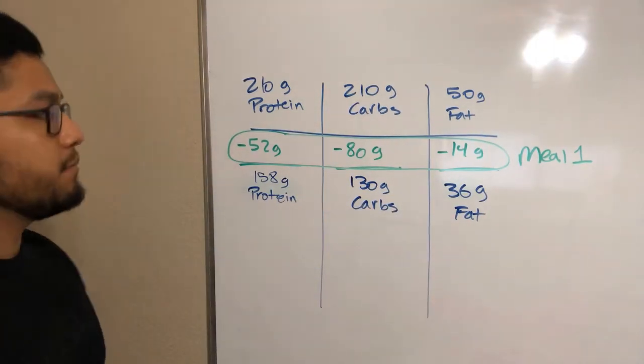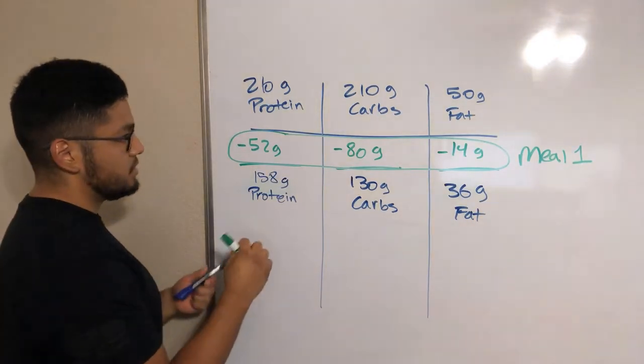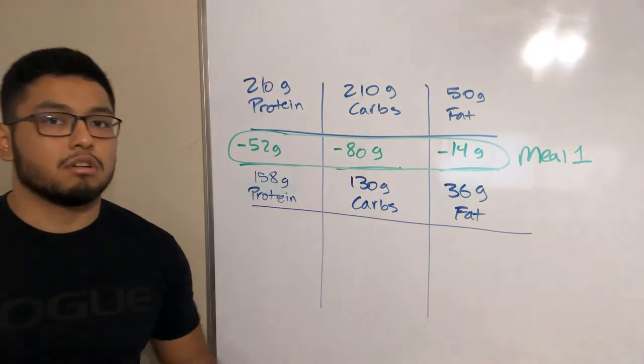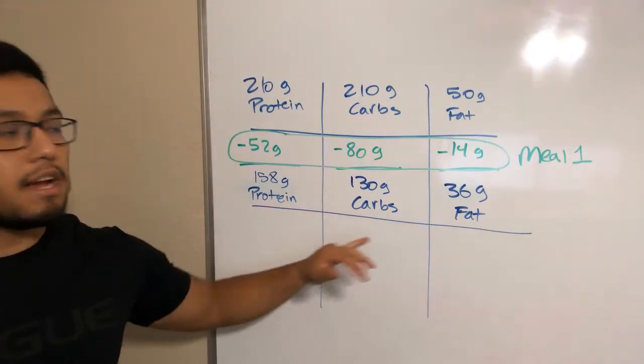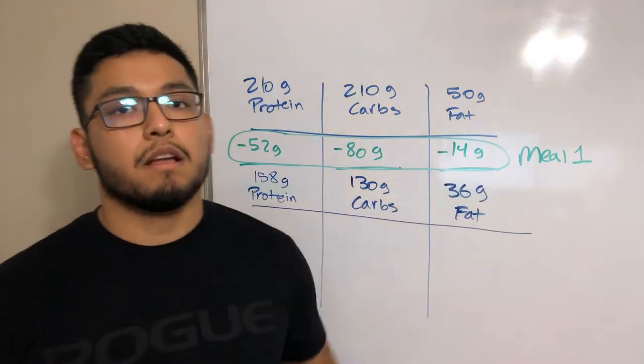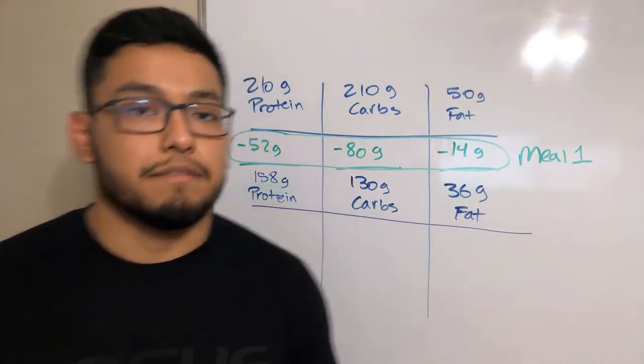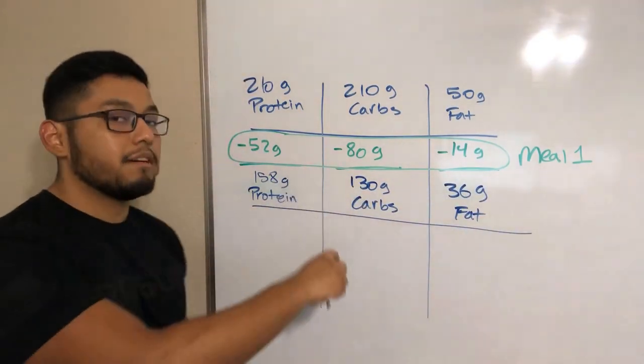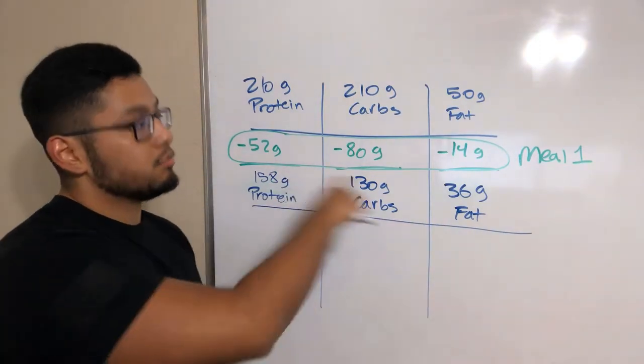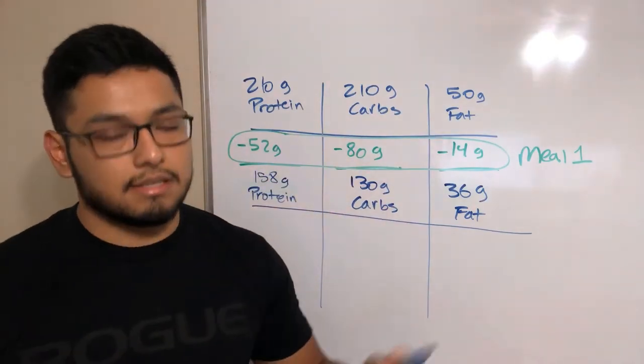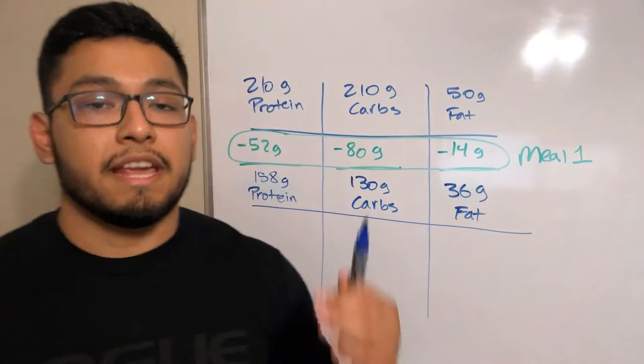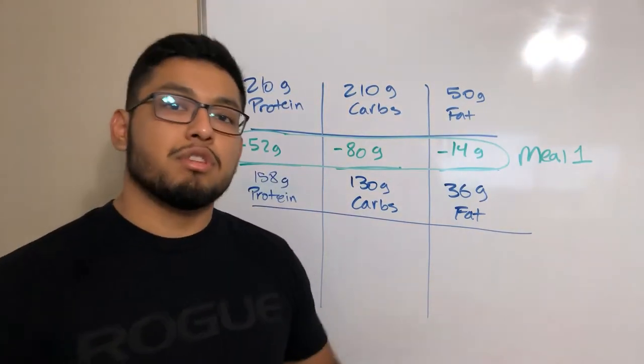That's meal one. I'm not saying that's an optimal meal one, but it's just an example. Now for the rest of the day you have this amount of macros left. Now you start over whenever you have meal two or snack. Scan the barcodes, it will tell you how much of each macronutrient you have left over. Now you don't have to do the math like I'm doing here. MyFitnessPal will show you exactly, it will do all this for you. I'm just showing this as an example for those of you who are new to MyFitnessPal or IIFYM.